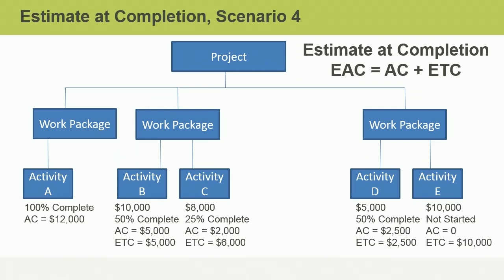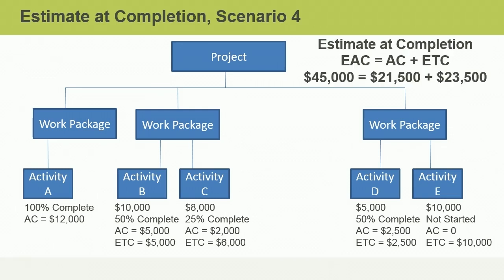Take a moment to perform a bottom-up estimate of these activities to determine what the ETC should be, then add the ETC to the actual cost to determine the EAC. Feel free to pause the video and resume when you're ready. Did you get a new EAC of $45,000? You first aggregate the actual cost for each activity to get an overall actual cost of $21,500. Then you aggregate the estimate to complete each activity for a bottom-up ETC of $23,500. Adding the actual cost to the ETC gives an EAC of $45,000.